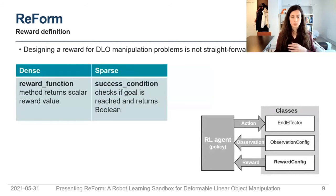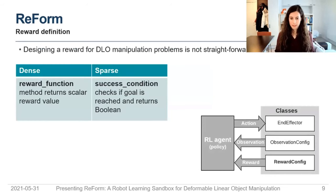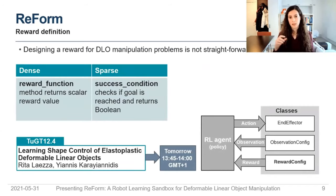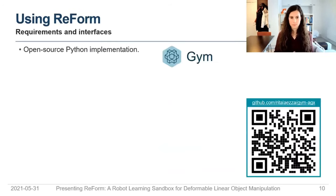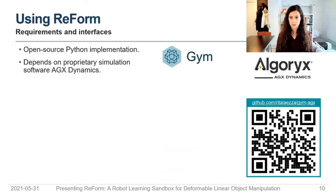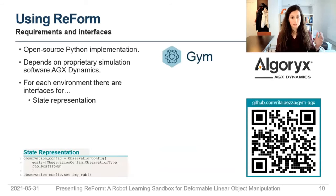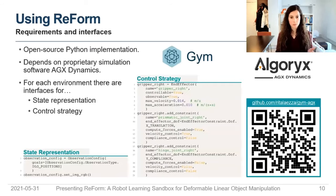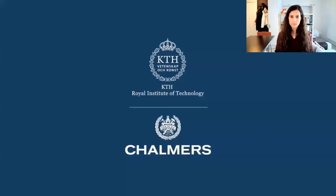There's also a reward definition class, which we find useful especially when there is no clear way to define the goal in a way that works well with reinforcement learning. In summary, to use REFORM you need a Python environment; it depends on Gym and on the simulation software AGX Dynamics. You can modify the current environments very easily by modifying the state representation, the control strategy, and for explicit shape control problems, even the reward function. That's all — thank you.